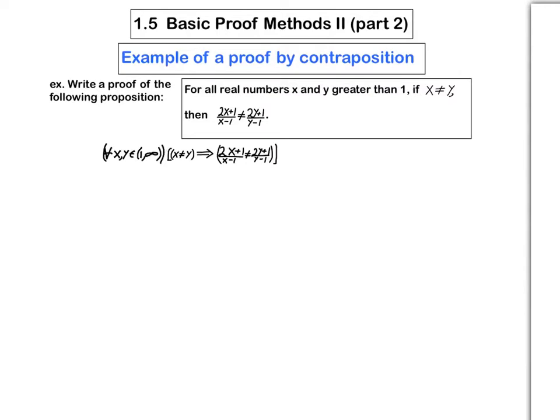Here it is written in symbols. Notice that I got the information about x and y being greater than 1 by just putting that into the information about my universal set. Instead of taking the universal set to be the set of reals, I took it to be the set of real numbers greater than 1. You're always free to do that if you wish. That can make the hypothesis a little bit easier to read.